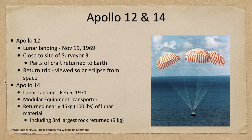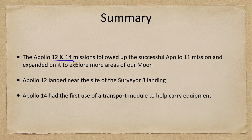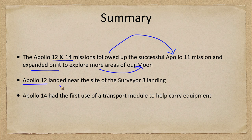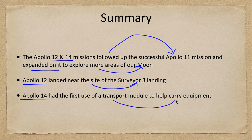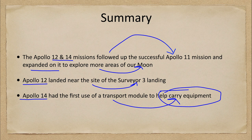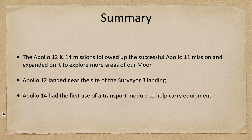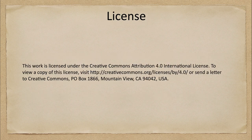To summarize: the Apollo 12 and 14 missions followed up on the success of Apollo 11 and expanded on it to explore more areas of the moon. Apollo 12 landed near the site of Surveyor 3 and brought back portions of that spacecraft. Apollo 14 had the first use of a modular equipment transporter, a preview of the lunar rovers used in future missions. That concludes this lecture — we'll be back next time for another exploration of the solar system.